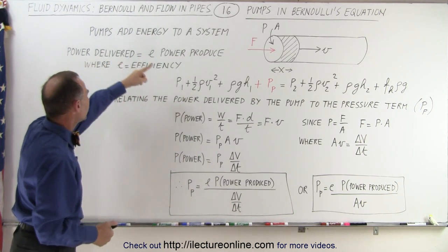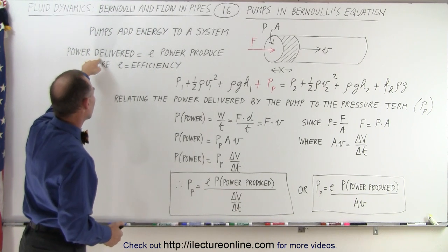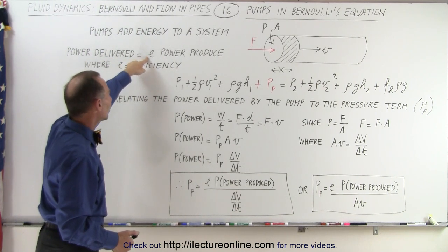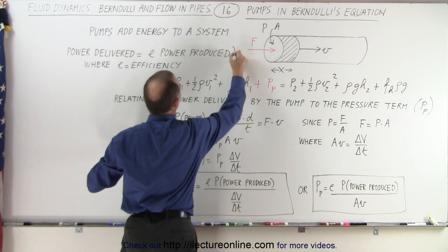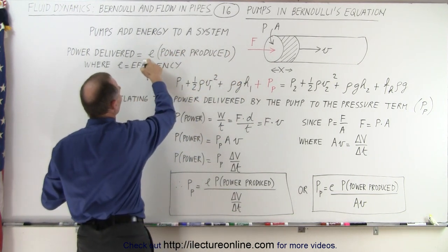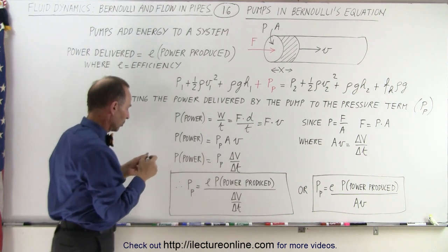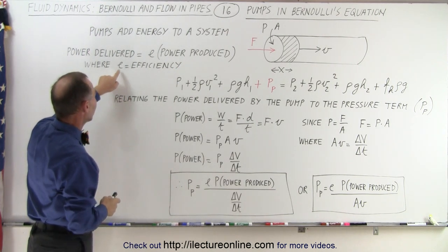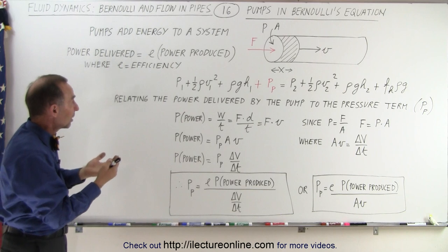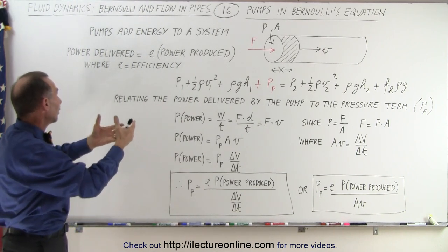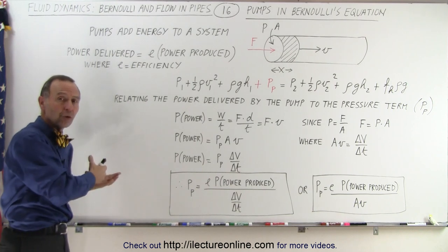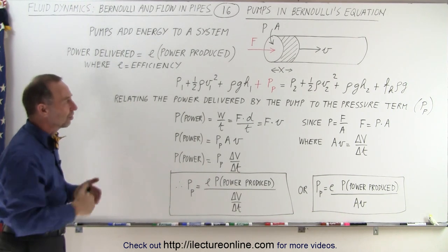Notice that we have an equation here where the power delivered by the pump equals the efficiency of the pump times the power produced. So it's the efficiency times the power produced. E is indeed the efficiency. So if the pump gives you five horsepower but it's only 80% efficient, that means you only get four horsepower delivered to the system.